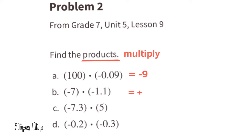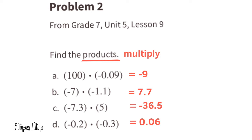Part b: I'm multiplying a negative times a negative, so my answer is going to be positive. 7 times 11 is 77, so 7 times 1.1 is going to be 10 times smaller than 77, or 7.7. Part c: this is a negative times a positive, so the answer is negative. 5 times 7 is 35, and 0.3 times 5 is 1.5, so 35 plus 1.5 is 36.5. Negative 7.3 times positive 5 equals negative 36.5. Part d: negative times negative gives a positive. Negative two-tenths times negative three-tenths equals positive six-tenths.